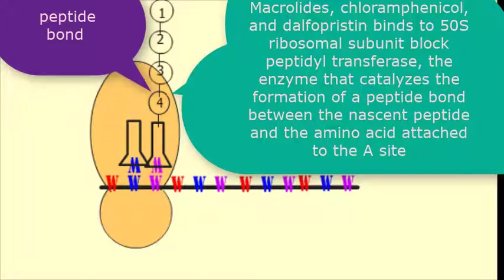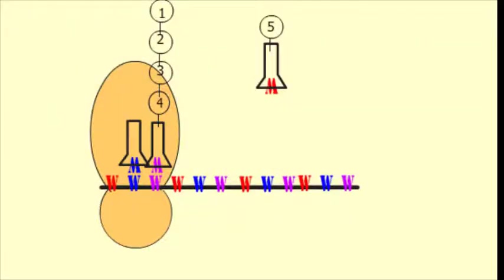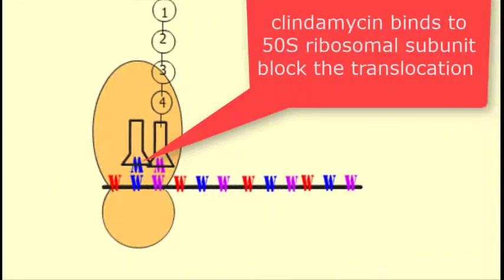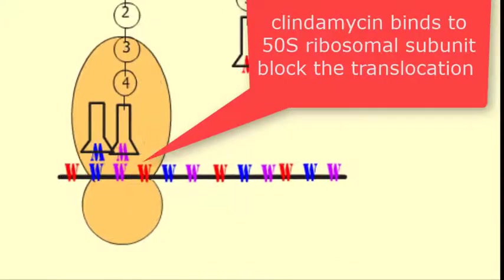Macrolides, chloramphenicol, and alpha-pristin bind to the 50S ribosomal subunit and block peptidyl transferase — the enzyme that catalyzes the formation of a peptide bond between the nascent peptide and the amino acid attached to the A site.